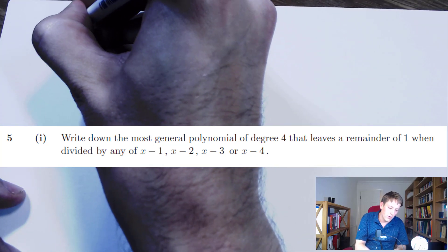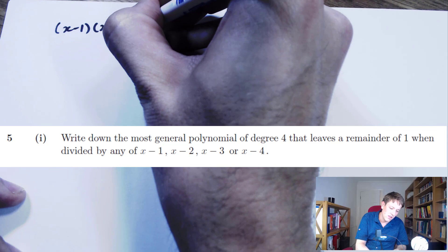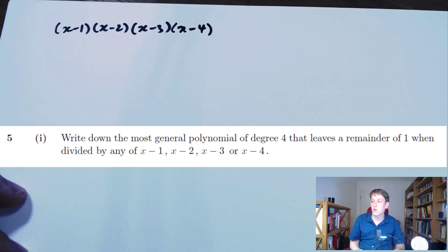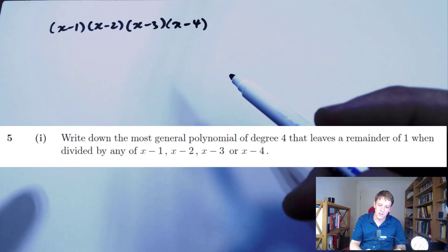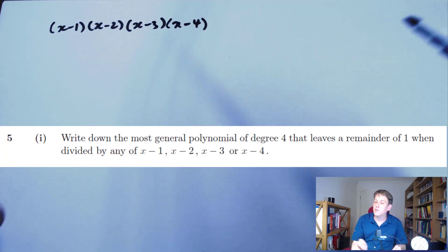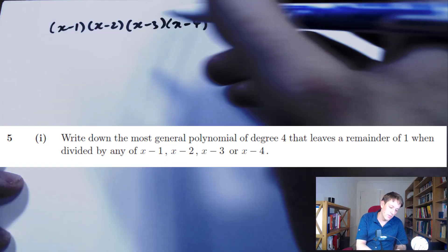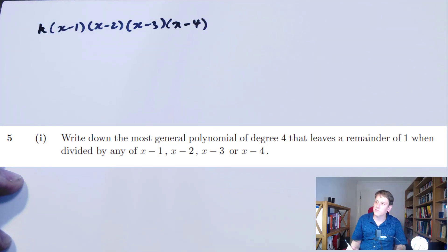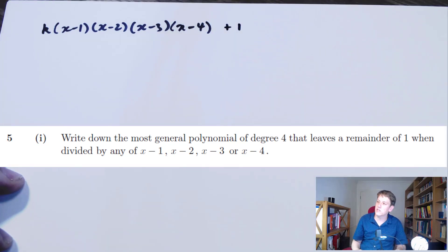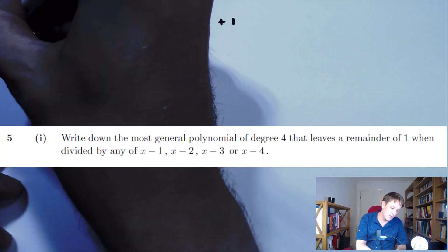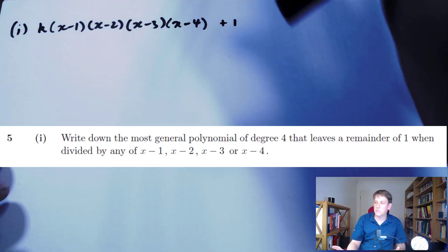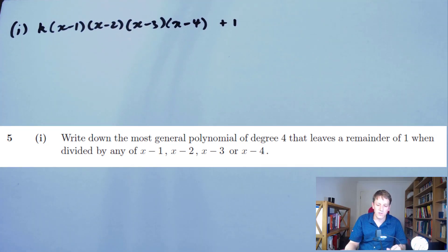If I had a polynomial like (x-1)(x-2)(x-3)(x-4), then if I divided this by any of the factors it would divide exactly, so this would leave a remainder of 0. This isn't quite the most general thing that leaves a remainder of 0 because I could also multiply it by a constant and still leave remainder 0. So if I want to leave a remainder of 1 instead, I just need to add 1 to this, and I get the answer to the first part of the question. The first part is meant to be something you can write down straight away if you're fluent in that theory.